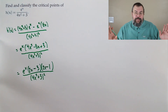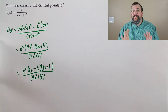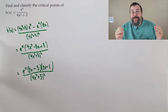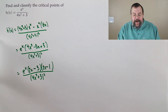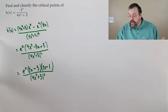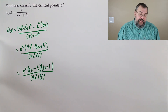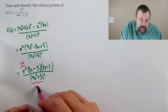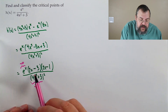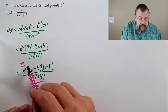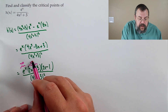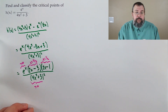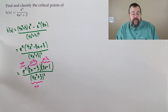We're now ready to identify our critical points. The derivative is never undefined; e to the x is always positive; the denominator is always positive. That leaves (2x minus 3)(2x minus 1). From 2x minus 3 equals 0, we get x equals 3/2. From 2x minus 1 equals 0, we get x equals 1/2. Those are our two critical points: x equals 1/2 and x equals 3/2.